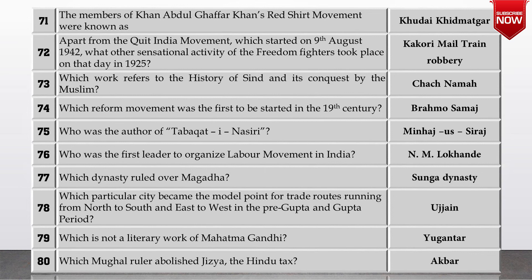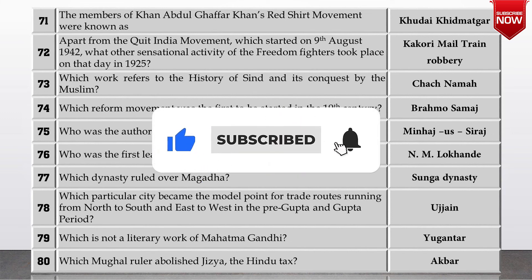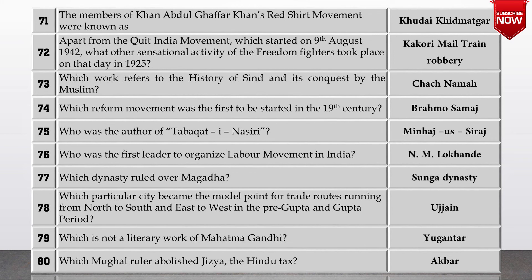Question 75: who was the author of Tabaqat-i-Nasiri? The answer is Minhaj-us-Siraj. Who was the first leader to organize the labor movement in India? The answer is N. M. Lokhande. Which dynasty ruled over Magadha? The Sunga dynasty. Which city became the model point for trade roads running from north to south and east to west in the pre-Gupta and Gupta period? It was Ujjain. Which is not a literary work of Mahatma Gandhi? Yugantar.